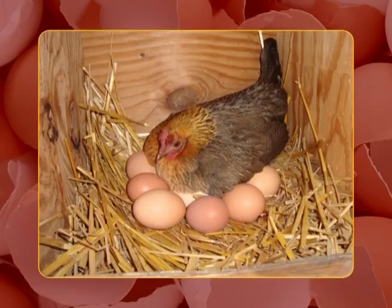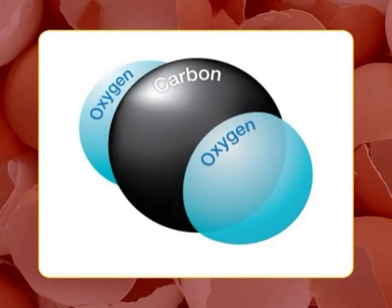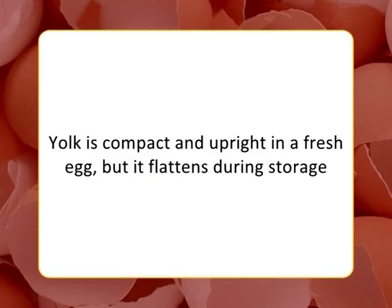Methods of preservation of eggs: As soon as an egg is laid, deteriorative changes begin, posing a danger to sensory attributes. The quality of an egg is highest at the time of laying. The diffusion of carbon dioxide through the pores of the shell causes a sharp rise in pH in egg white, from about 7.6 to 9.6.